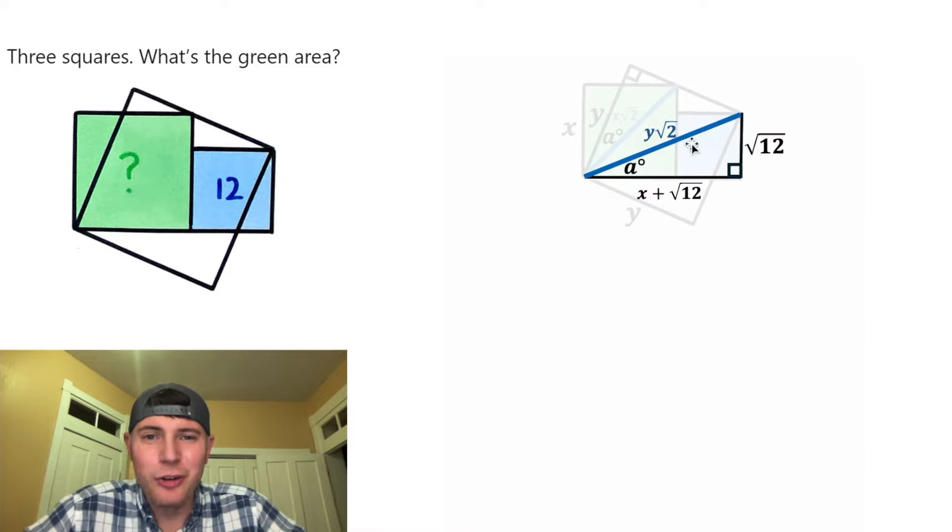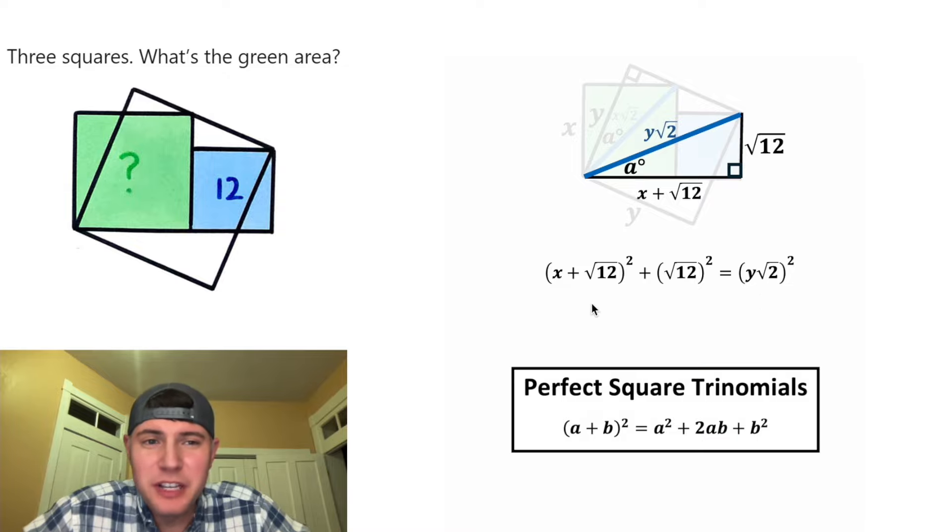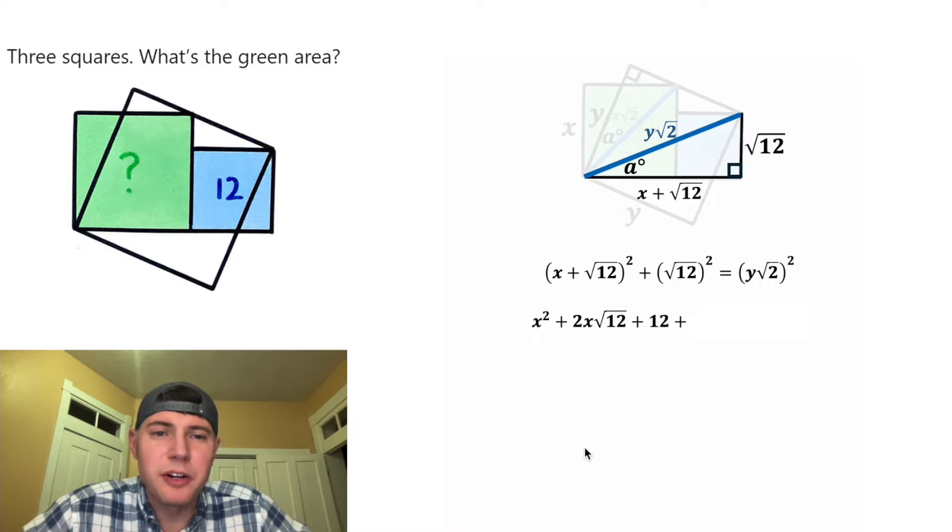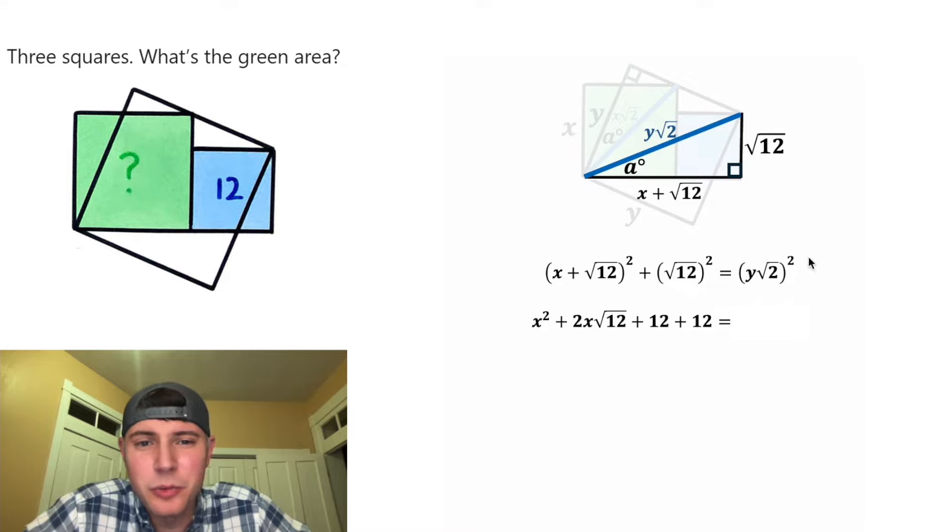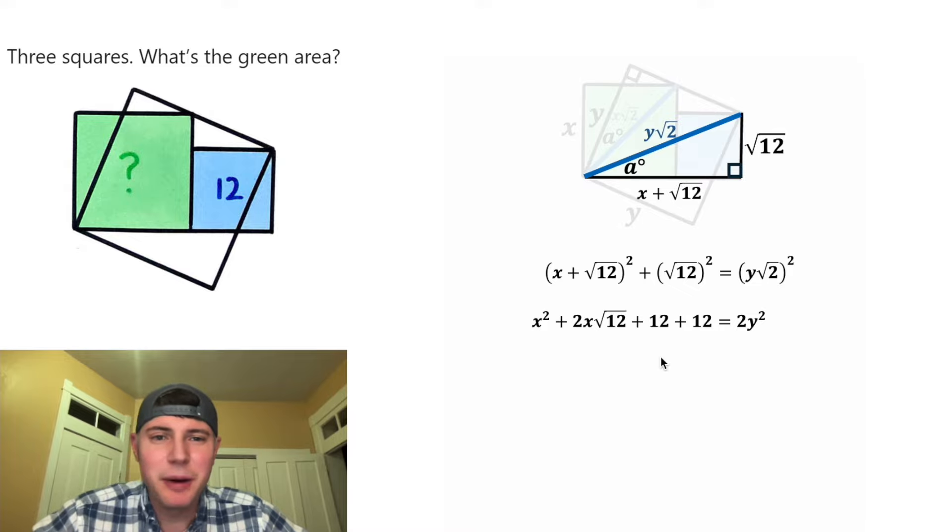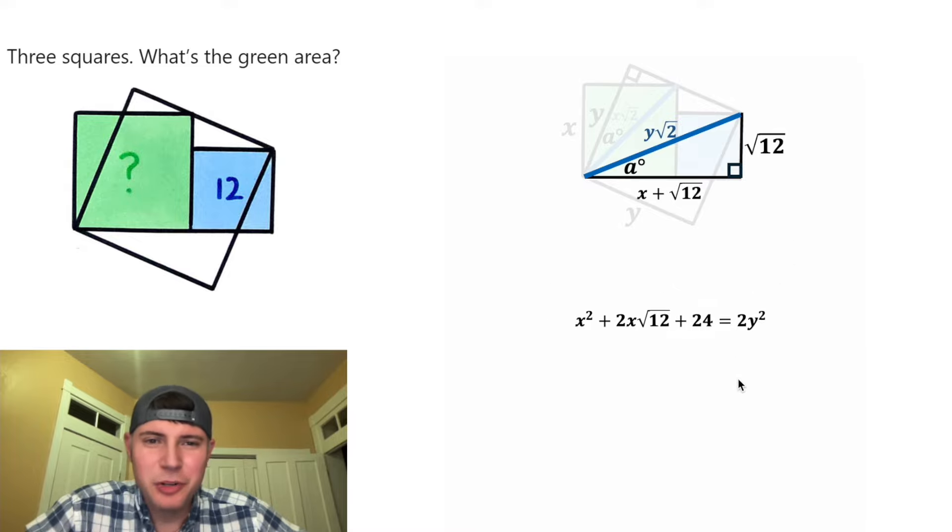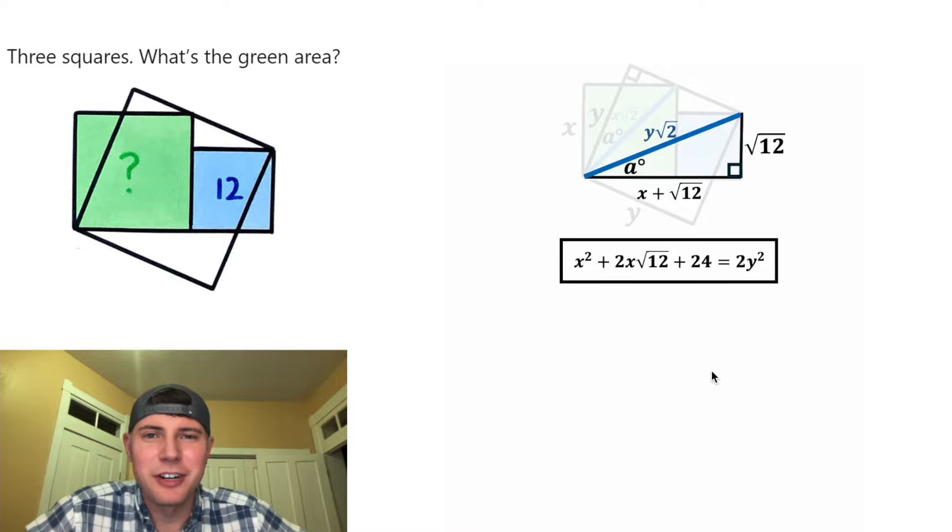We know something about all three sides, so let's do the Pythagorean theorem. It's X plus root 12 squared plus root 12 squared equals Y root two squared. For this first piece, we can use the notes of a perfect square trinomial, and I'll break it out into X squared plus two X root 12 plus 12. And then square root of 12 squared is equal to 12. And then on the right-hand side, root two squared is equal to two, and Y squared is equal to Y squared. Next, we can combine like terms, 12 plus 12 is equal to 24.